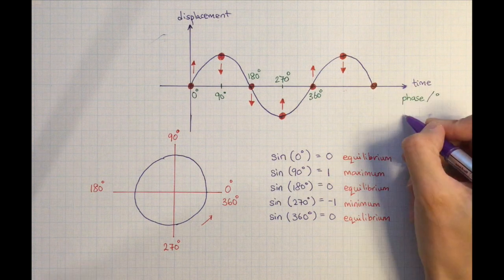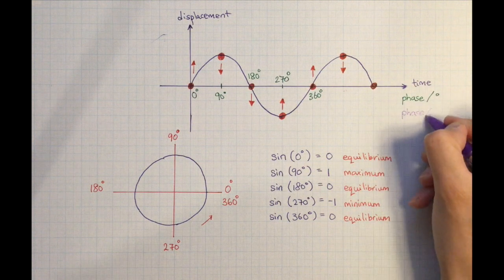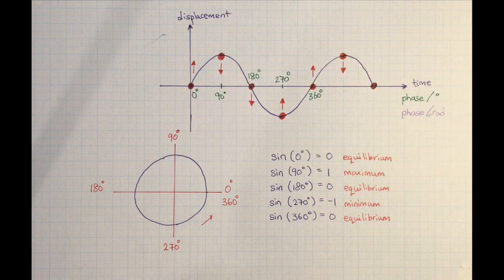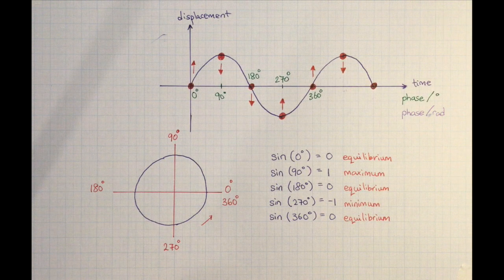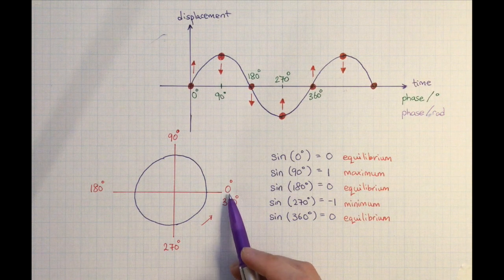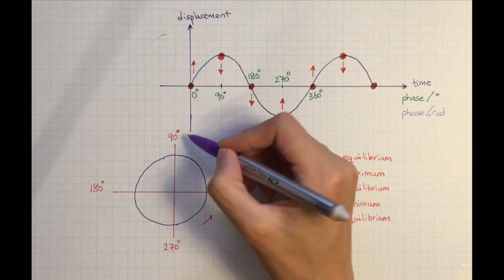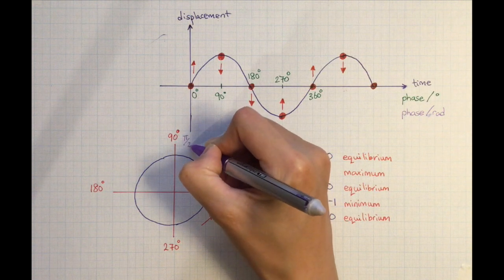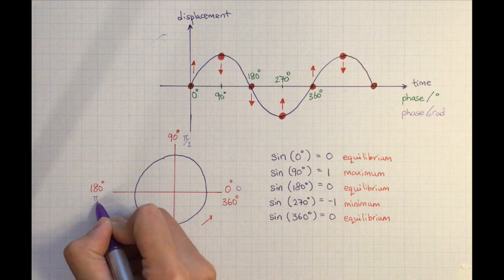Remember how we can represent angles in radians instead of degrees? We can do the same thing here. Zero degrees is zero pi. A full circle is 2 pi. Half a circle is pi.